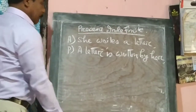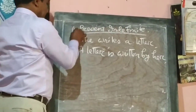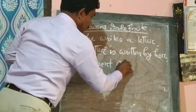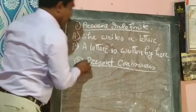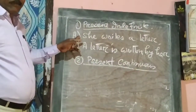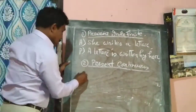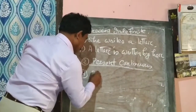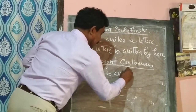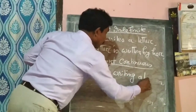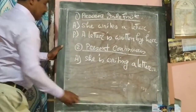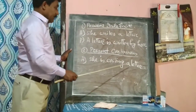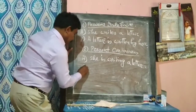Now, present continuous tense. Active voice example: 'C is writing a letter.' This is the present continuous tense.